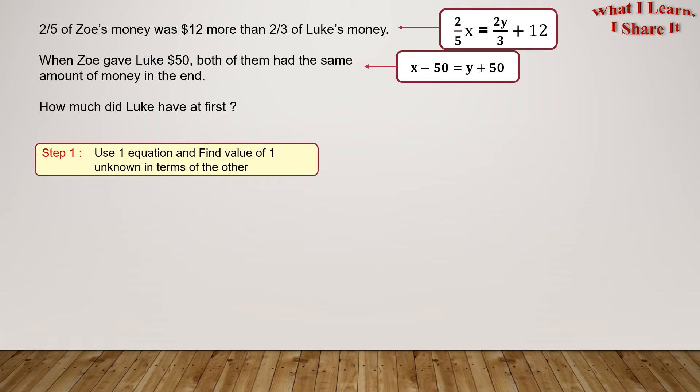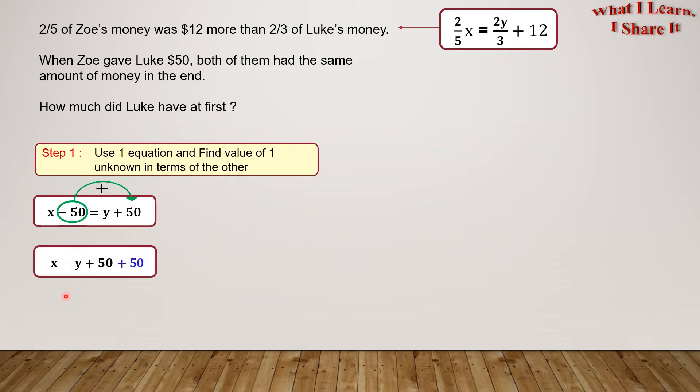Starting with Step 1. Let's start with this equation because it's easier to find X in terms of Y. And how do we do that? We can do it by transposing. We can transpose negative 50 to the other side. When we transpose, the sign will change to plus. So, we get X equals Y plus 50 plus 50. Plus 50 and plus 50 will give us 100. So, our equation will become X equals Y plus 100. We got our first unknown, X, in terms of Y. Now, we will move on to Step 2.